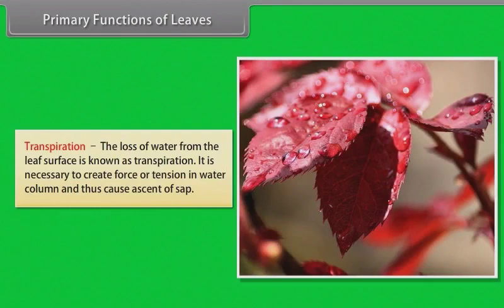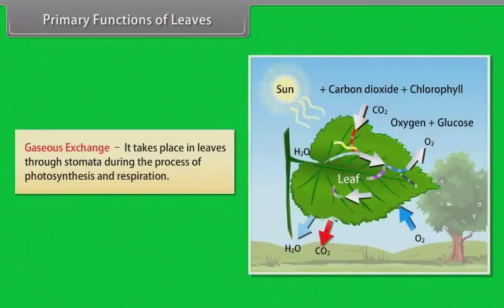Transpiration: the loss of water from the leaf surface is known as transpiration. It is necessary to create force or tension in water column and thus cause ascent of sap. Gaseous exchange: it takes place in leaves through stomata during the process of photosynthesis and respiration.